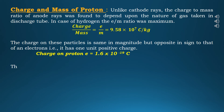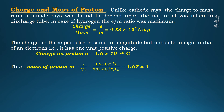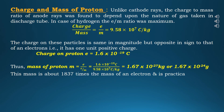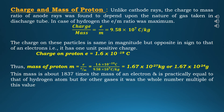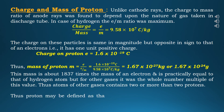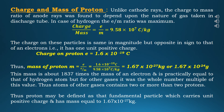We can find the mass of the proton by dividing the charge on the proton by the charge-over-mass ratio: 1.6 × 10⁻¹⁹ ÷ 9.58 × 10⁷, which comes out to be 1.67 × 10⁻²⁷ kg or 1.67 × 10⁻²⁴ g. This mass is about 1837 times the mass of an electron and is practically equal to that of a hydrogen atom. For other gases, the mass was a whole number multiple of this value, meaning atoms of other gases contain two or more protons. Thus, a proton is that fundamental particle which carries a unit positive charge and has mass equal to 1.67 × 10⁻²⁷ kg.